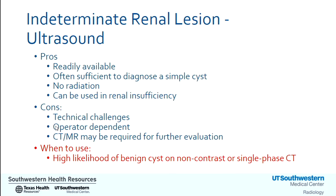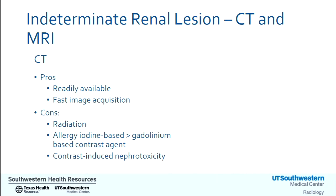Beginning with ultrasound: it should be available in most locations and alone is often sufficient to diagnose a simple cyst — a Bosniak 1 — and then you're done. There is no radiation involved, and renal insufficiency is not an issue. However, technical challenges include patient body habitus, lesion location, and presence of calcifications, which may limit lesion visualization. The quality of the ultrasound is also operator dependent. If a lesion other than a simple cyst is encountered, a contrast-enhanced CT or MRI may still be required for further evaluation. The ideal situation to use ultrasound is when there is already a high likelihood of a benign cyst on a non-contrast or single-phase CT.